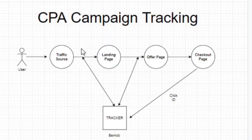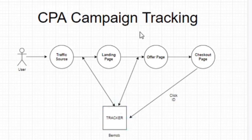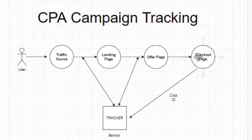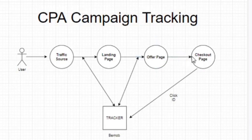The tracker then redirects the click back to the traffic source, which then moves to the landing page. From the landing page, the user sees the offer and clicks on it to proceed. The tracker also records that click and sends it to the offer page. On the offer page, this is where the client or visitor does everything needed regarding the offer. From there they proceed to checkout. From the offer page, everything is out of your hands — it's up to the affiliate network now.